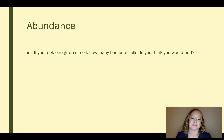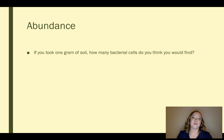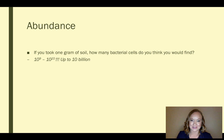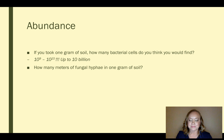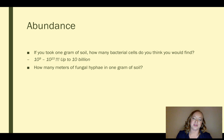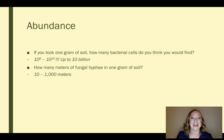So what about their abundance in the soil system? If you took one gram of soil, how many bacterial cells do you think you would find? I think the answer would surprise you. One gram of soil is something that would easily fit into the palm of your hand. The answer is up to 10 billion bacterial cells in that one tiny little gram — so there's a lot of activity going on in the soil profile. How many meters of fungal hyphae are in that same one gram of soil? Fungal hyphae are microscopic filaments of fungi, kind of like little arms reaching out through the soil. Ten to a thousand meters of hyphae in that one small gram.